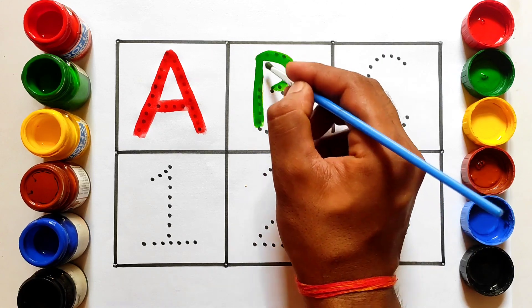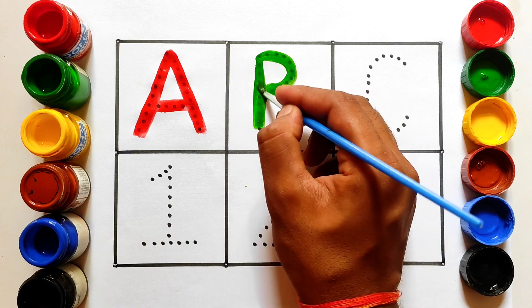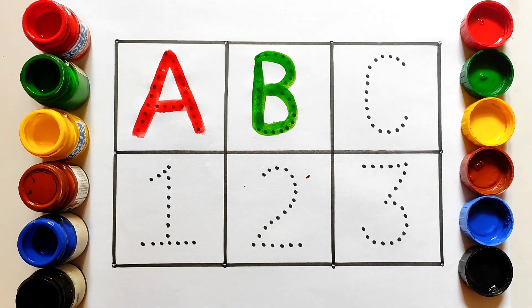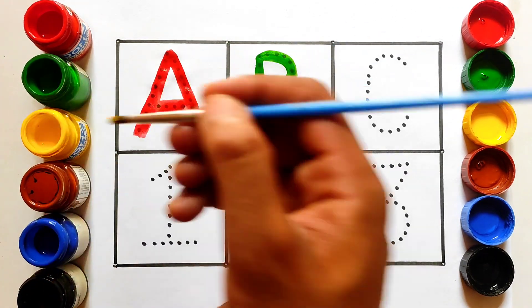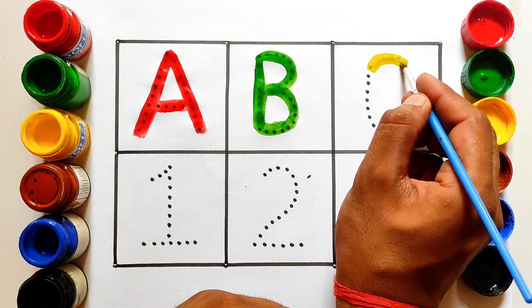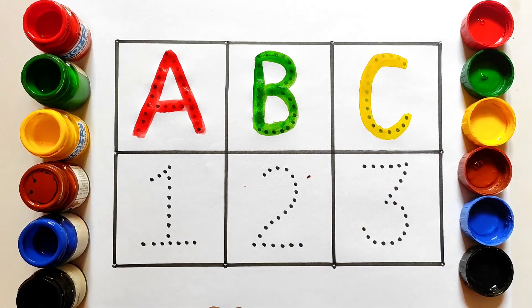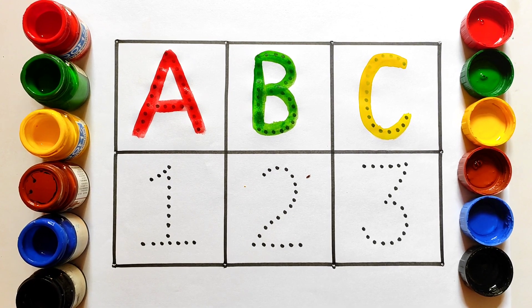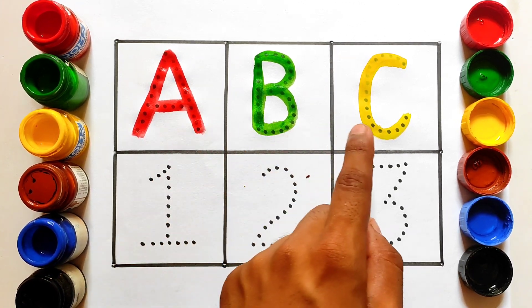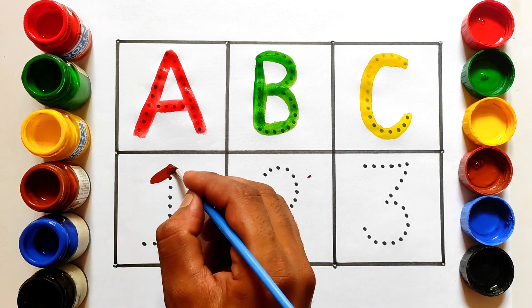B, B, B for balloon, B. C, C for carrot, C. A, B, C. Number one.